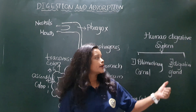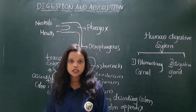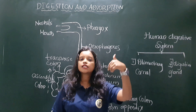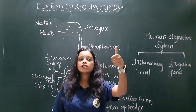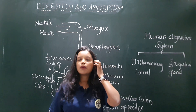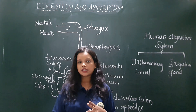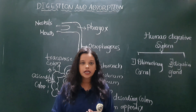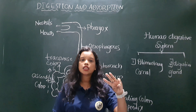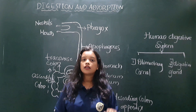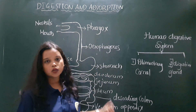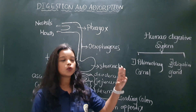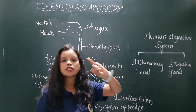Apart from the alimentary canal, there are also digestive glands. There are three digestive glands in our digestive system. The first is the salivary gland, which is present in the mouth. There are three pairs of salivary glands: the parotid gland, the submaxillary or submandibular gland, and the sublingual salivary gland. Apart from the salivary gland, there is also the liver and the pancreas. So salivary gland, pancreas, and liver are the three digestive glands.